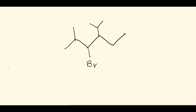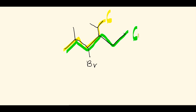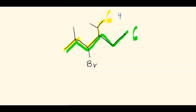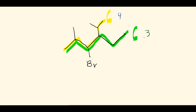This is the last example. Let's find the parent chain. Comparing candidates: the green chain is six carbons long, and the yellow chain is also six carbons long — a tie. So we compare branching. The yellow chain has four branches; the green chain has three branches. The one with the most branching wins, so the yellow chain is the parent chain.